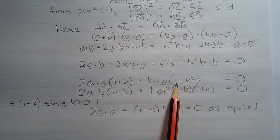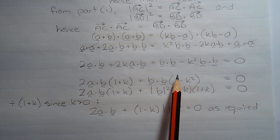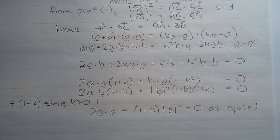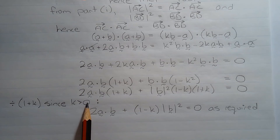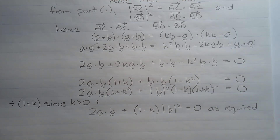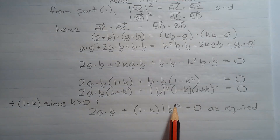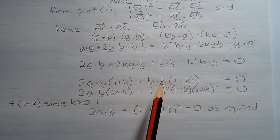Notice that 1 minus K squared is a difference of two squares, so we can factor it as (1 + K)(1 − K). We can then divide all terms by (1 + K), since K is greater than zero there is no division by zero, and those factors disappear. We end up with 2 times the dot product of vector a and vector b plus (1 − K) times the square of the magnitude of vector b equals zero, as required, since the dot product of vector b and vector b equals the square of the magnitude of vector b from part 1.